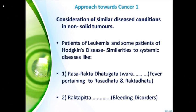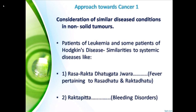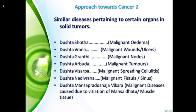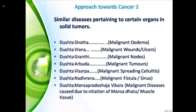The first approach is considering similar disease conditions in non-solid tumours. Patients with leukemia or Hodgkin's disease show similarities to systemic diseases like rasa-rakta-dhatu-kata-jwara — fever pertaining to rasa-dhatu and rakta-dhatu — and raktapitta, that is, bleeding disorders. Similarly, malignant edema, malignant wounds, and malignant nodes can be compared to dushta-sotha, dushta-vrana, and dushta-granti. Malignant tumours correspond to dushta-arbuda, and malignant spreading cellulitis corresponds to dushta-visarpa.